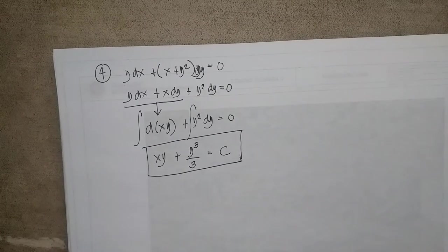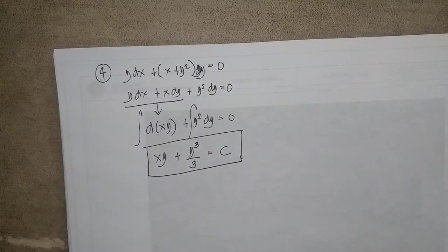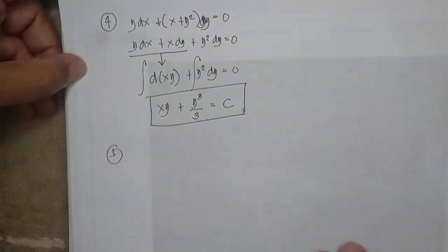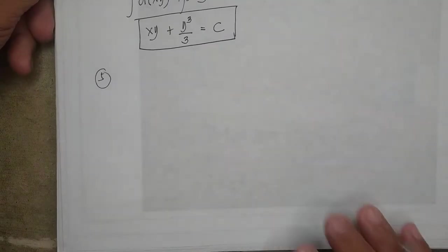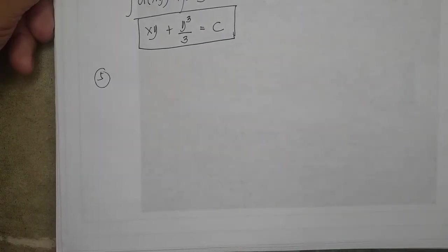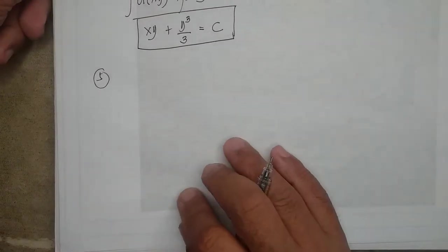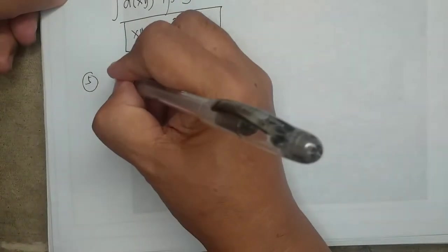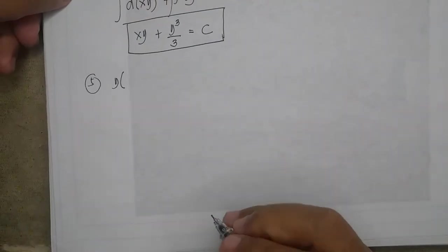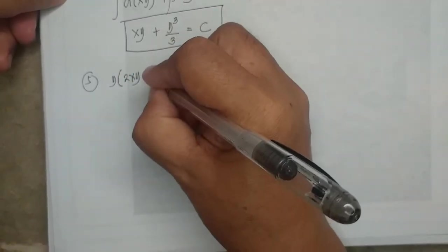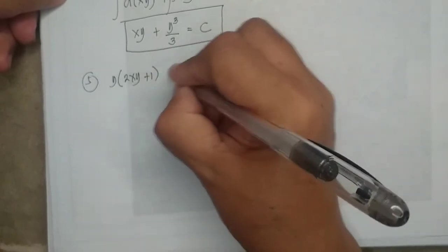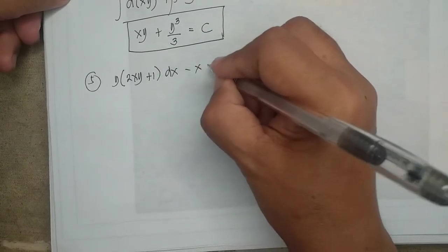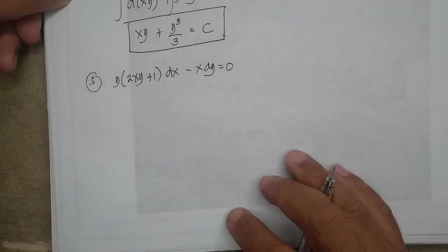That is the simplest problem under integrating factor determined by inspection. Let's have example number five: find the solution of y(2xy + 1) dx minus x dy = 0.